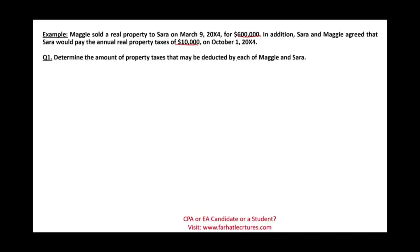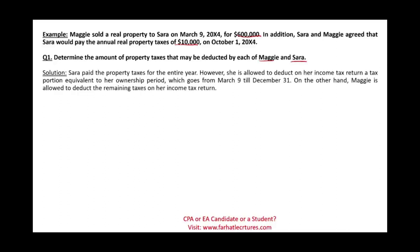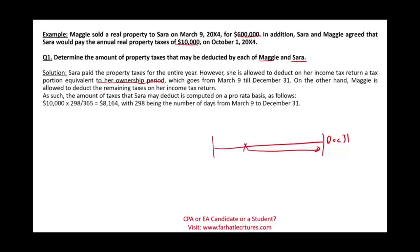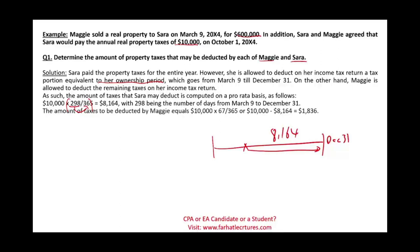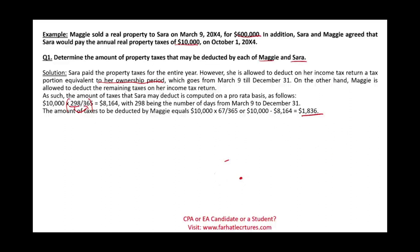We need to determine the amount of property taxes deductible by each of Maggie and Sarah. It's going to be prorated. Sarah paid the property taxes for the entire year; however, she's allowed to deduct on her income tax return only the portion equivalent to her ownership period — from March when she purchased the property through December 31st. Maggie is allowed to deduct the remaining taxes on her income tax return. Sarah's prorated share: 298 days divided by 365, multiplied by $10,000, equals $8,164. Maggie's share: 65 days divided by 365, multiplied by $10,000, equals $1,836.